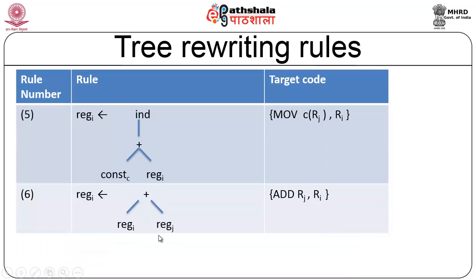Rule 5: register i computes an addition used as an index, with the target being a register. Given constant c and register j, the contents are accessed with an offset of c: move c(Rj), Ri — indexed-based computation with offset c moved into Ri. Rule 6 is a simple addition: register i plus register j, result in register i. The instruction is: add Rj, Ri.